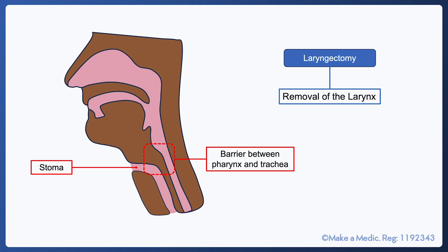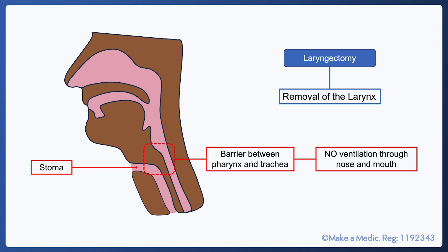It's important to note that in the case of a laryngectomy, given that a barrier has been created between the pharynx and the trachea, no ventilation will take place through the nose and mouth. The barrier is formed to prevent aspiration given that the larynx has been removed, and so administering oxygen or trying to ventilate the patient through the mouth will not be effective. There is a separate emergency algorithm for laryngectomies written by the National Tracheostomy Safety Project, which can also be found in the description below.